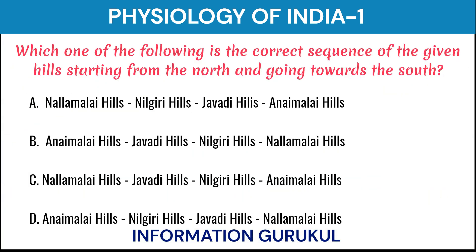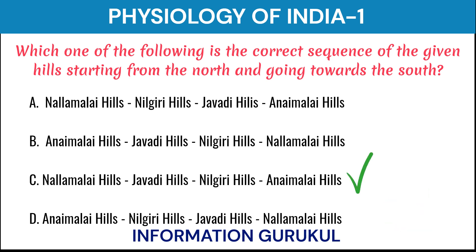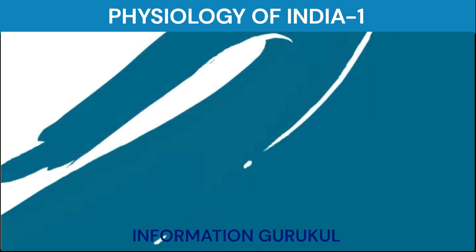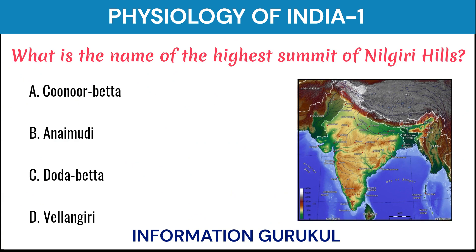Which one of the following is the correct sequence of the given hills starting from the north and going towards the south? Nallamalai Hills, Jawadi Hills, Nilgiri Hills, Anaimalai Hills. What is the name of the highest summit of Nilgiri Hills? Doddabetta.